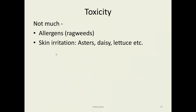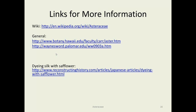Regarding toxicity, there's not much to worry about — a few allergens like ragweed, and occasionally some people get skin irritations from asters and daisies, but in general they're pretty innocuous relative to other plant families. For more information, if you're interested in dyeing silk there's a lengthy explanation of how to use safflower on the bottom link, and there's Wikipedia and some other general-interest references as well. That concludes the Asteraceae.